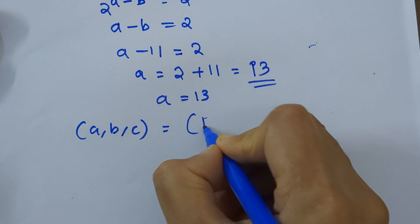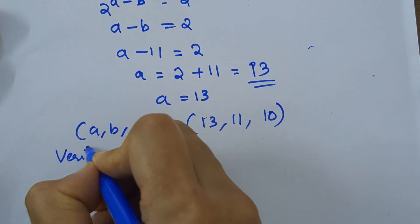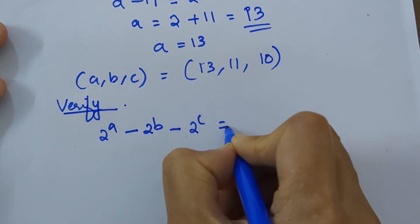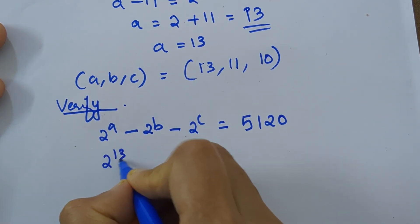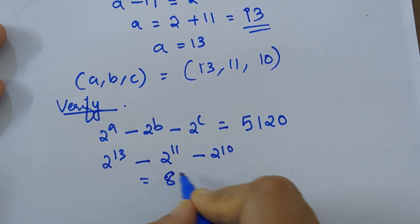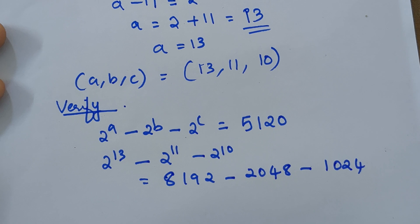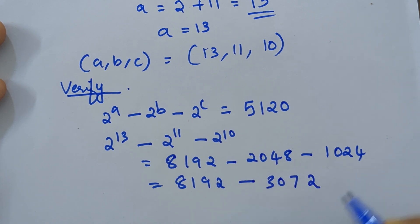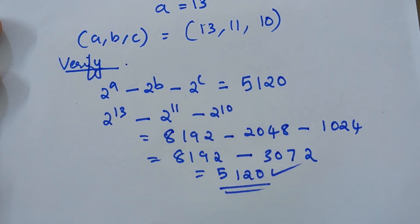So we got a, b, c equal to 13, 11, and 10 respectively. Let's verify: 2 raised to 13 is 8192, minus 2 raised to 11 is 2048, minus 2 raised to 10 is 1024. That gives 8192 minus 3072, which equals 5120. Thus we have verified our answer.